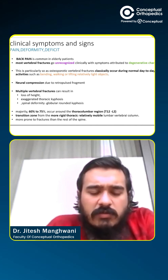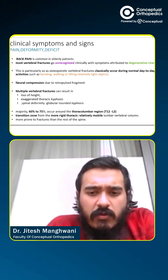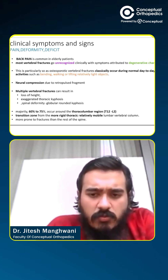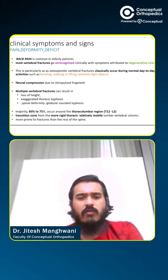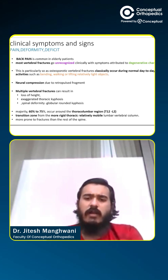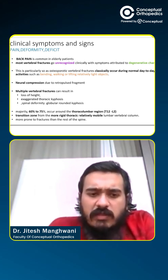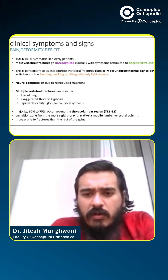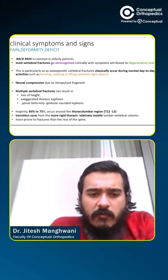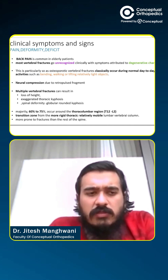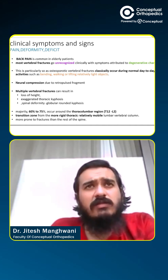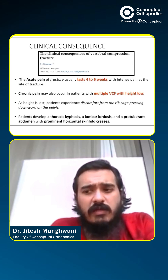The majority of fractures — 60 to 75% — occur around the thoracolumbar region, between T12 and L2. This is the transition zone from thoracic kyphosis to lumbar lordosis, where the more rigid thoracic spine meets the mobile lumbar area. Once a fracture develops here, the chances of subsequent fractures at other spinal levels increases significantly.